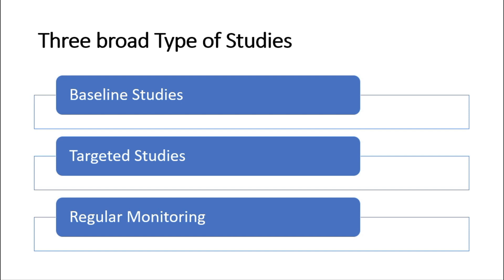There are broadly three types of studies: baseline studies, targeted studies, and regular monitoring. Baseline studies are intended to document the present state of the environment in order to establish future changes resulting from the impact of climate events — for example, construction of a dam or accidents such as oil spills.